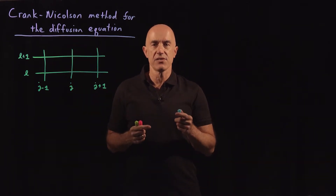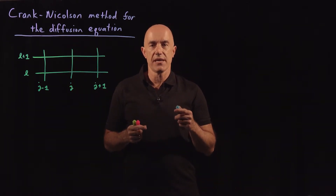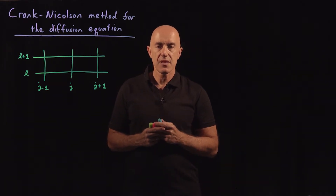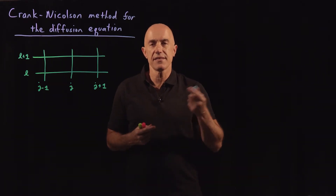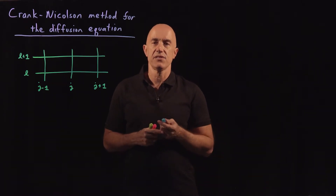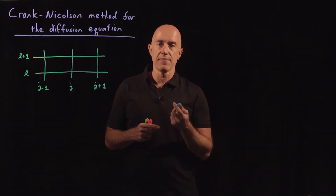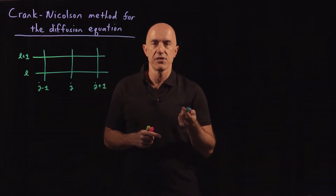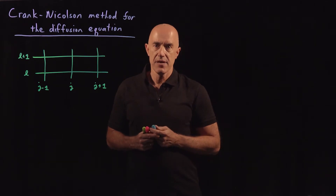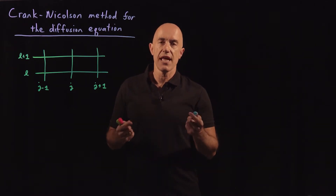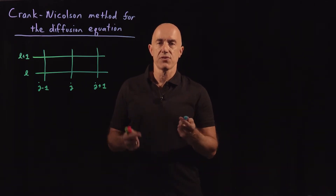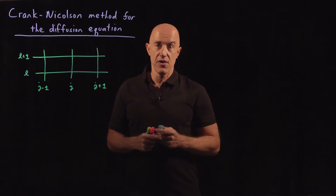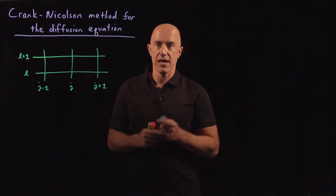The Crank-Nicholson method has the advantage of being unconditionally stable. It has the disadvantage of having to solve a matrix equation at each time step. But on the other hand, the matrix turns out to be tri-diagonal, and it's a very fast algorithm.